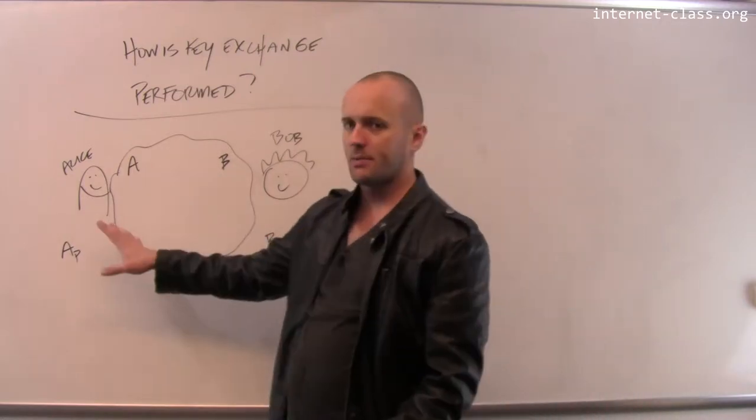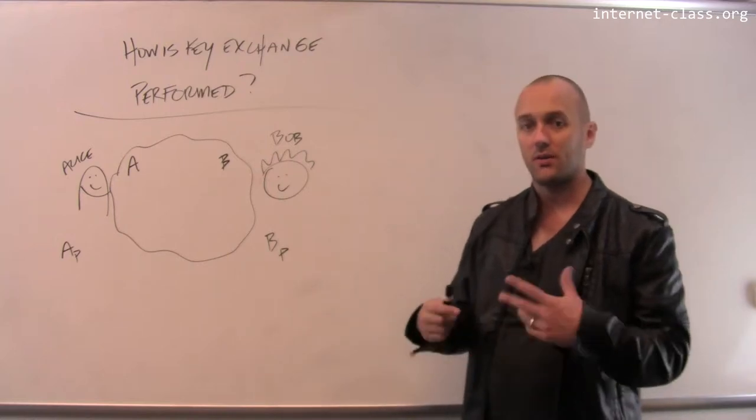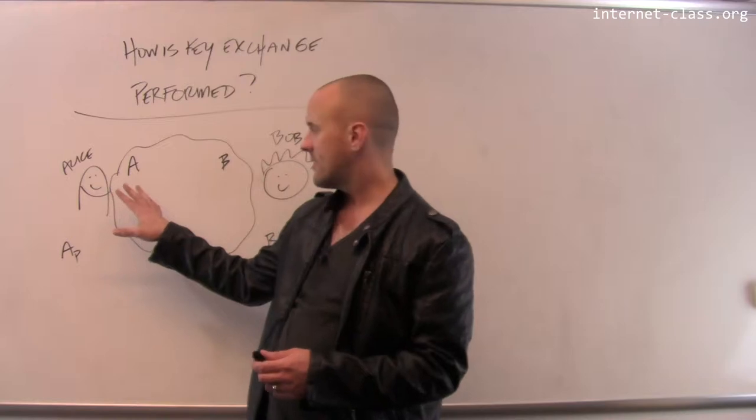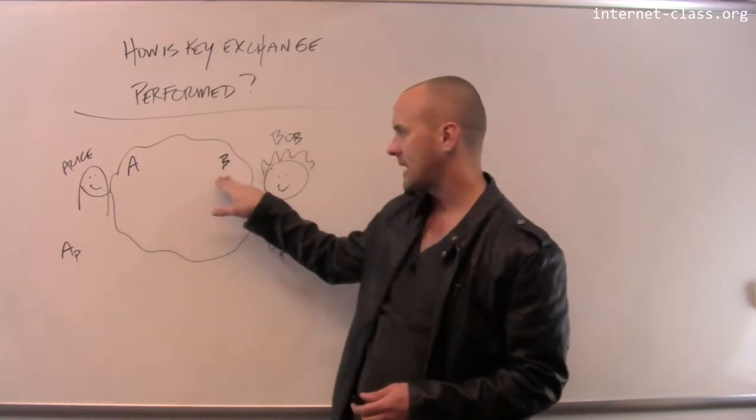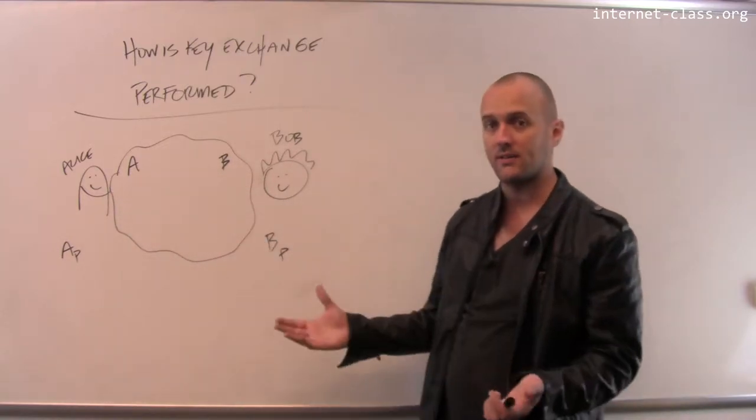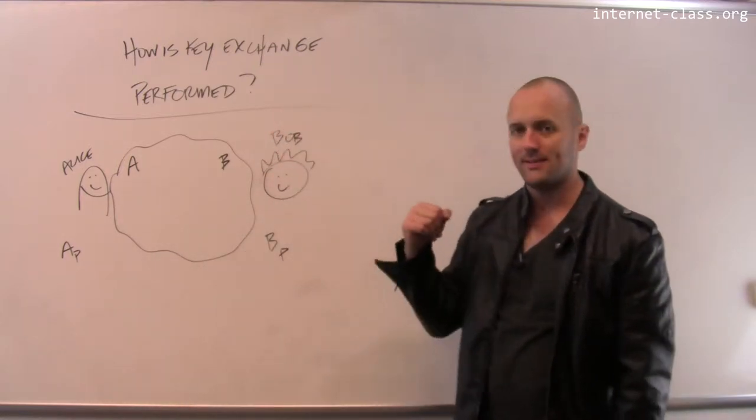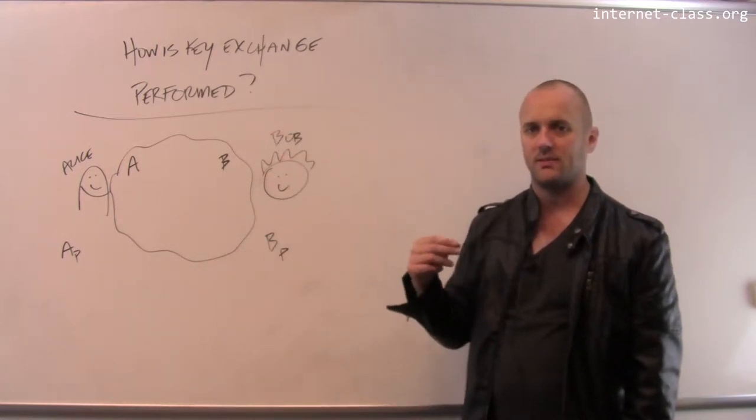I've got Alice and Bob, typically as they usually are, trying to communicate over this insecure internet. So Alice has her public key, Bob has his public key. Those are published. They're online somewhere where each other can find it, and they also have their private keys that they're keeping secret so that they can decrypt messages that are sent to them.